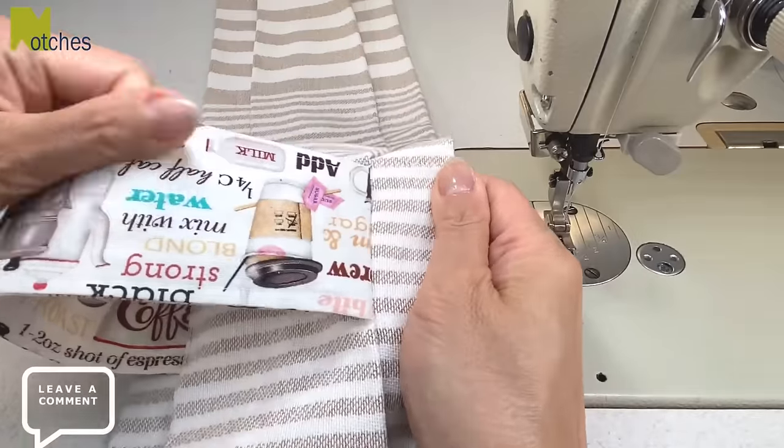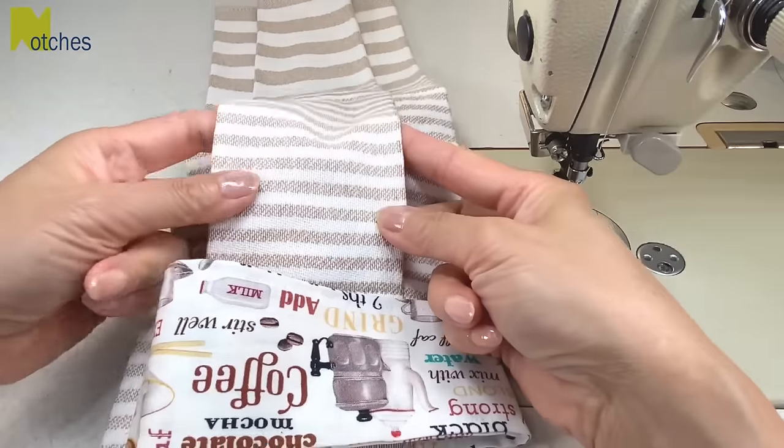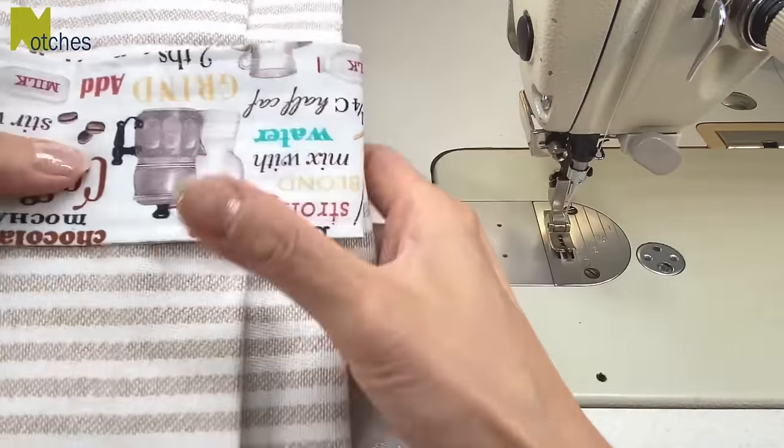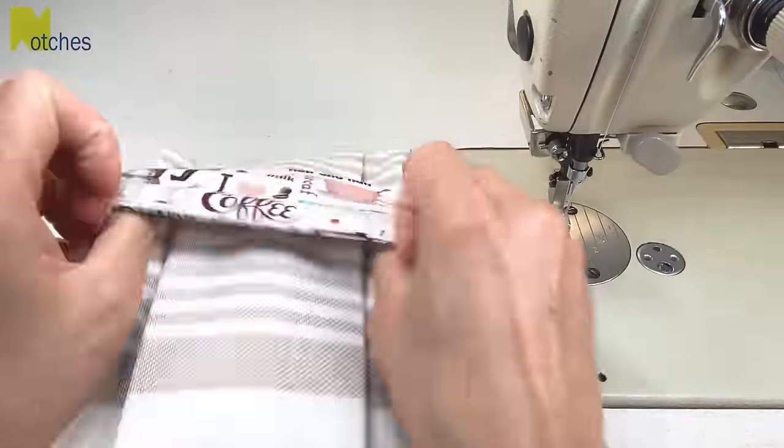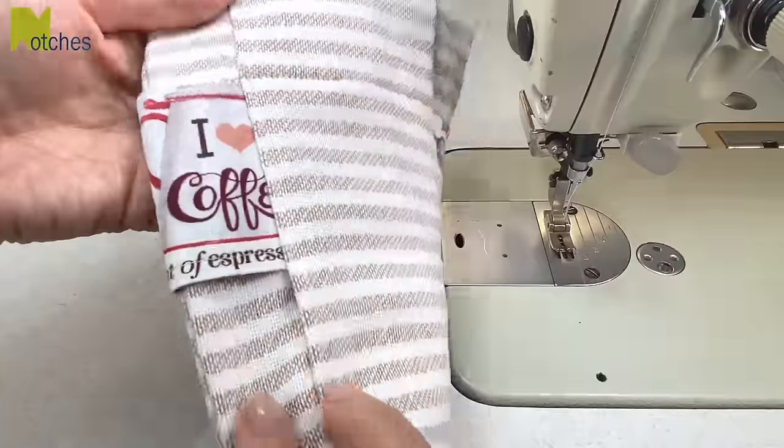So that's a nice easy way to attach the band. Fold the top of the towel and turn it over to the front and just tuck that top part into the band and adjust everything so it's nice and flat.